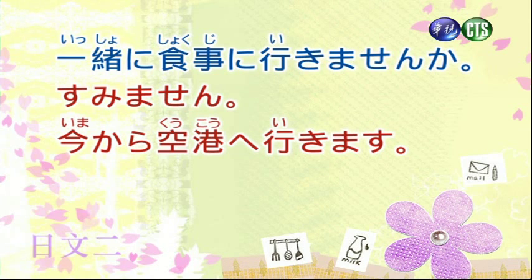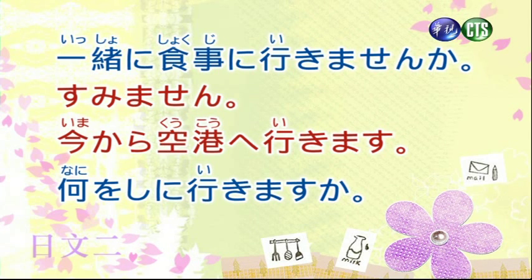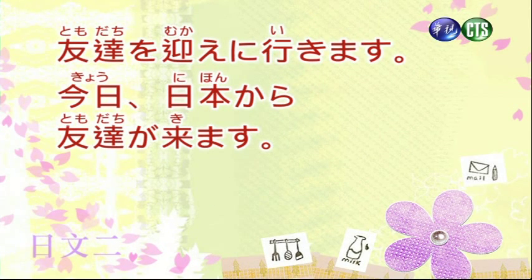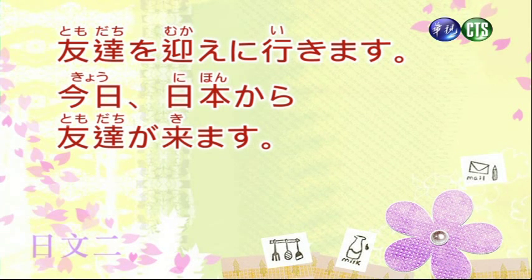すみません、今から空港へ行きます（對不起，我現在要去機場）。今からのからは起點的用法，我現在就要去機場了。何をしに行きますか（你要去做什麼）。何をしますかの、しますの把ますを拿掉換成動作目的のに，變成何をしに行きますか。友達を迎えに行きます（我要去接朋友）。友達を迎えます是迎接朋友，把ます換掉變成友達を迎え，加上動作目的のに，後面加上行きます，表示我去的目的是迎接朋友。